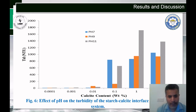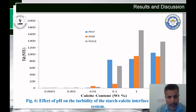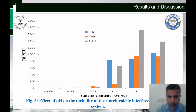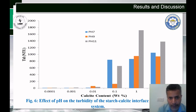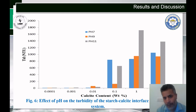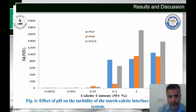Figure number six shows the effect of calcite content in weight percent on turbidity values at different pH values. Despite fluctuated pH dependence on starch adsorption onto calcite calcium carbonate, adding more calcium carbonate similarly led to an increase in turbidity. Overall, decreasing the pH caused a decrease in turbidity, which could be due to an increase in the amount of adsorbed starch.